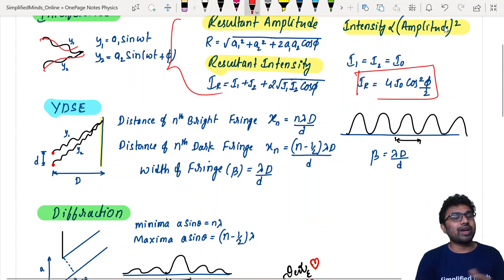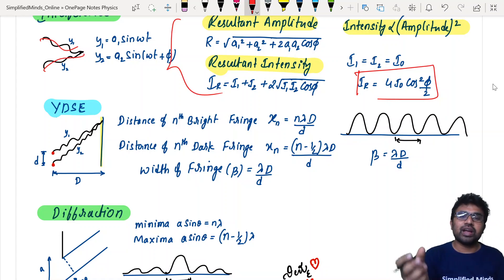Next comes the YDS experiment. You'll know this YDS experiment very well, and you should know the formula very well. The distance of the nth bright fringe is given by xn equals n lambda D by d, and distance of the nth dark fringe is given by xn equals n minus half lambda D by d. Sometimes for n plus half, n should start from 0; for n minus half, n should start from 1.